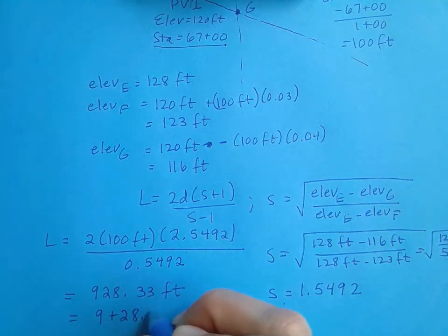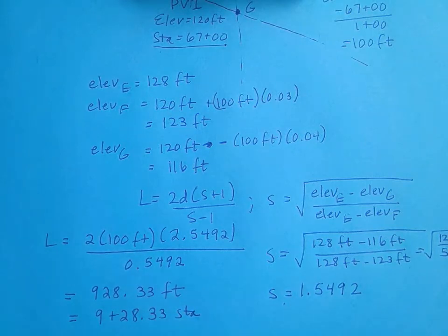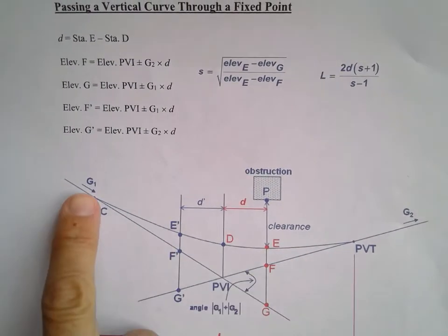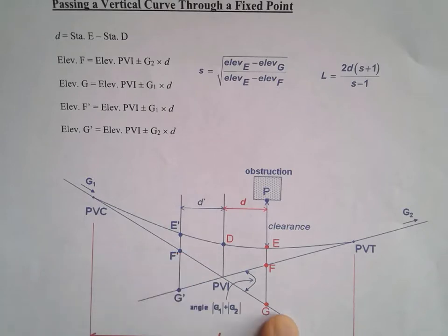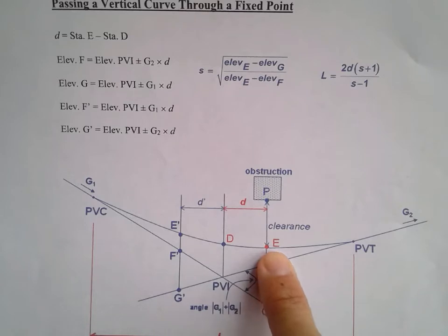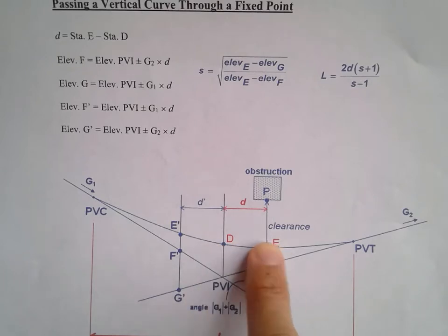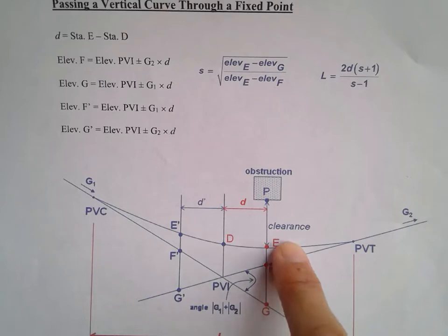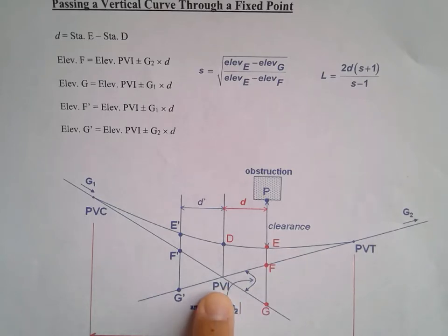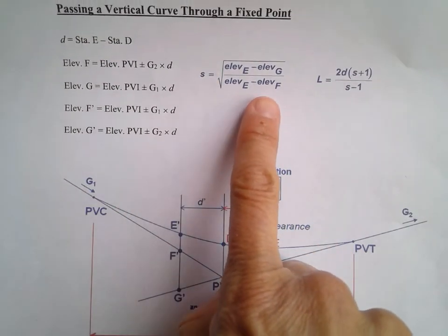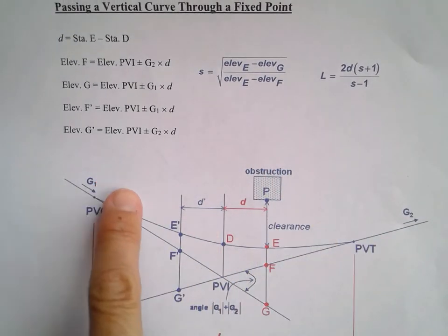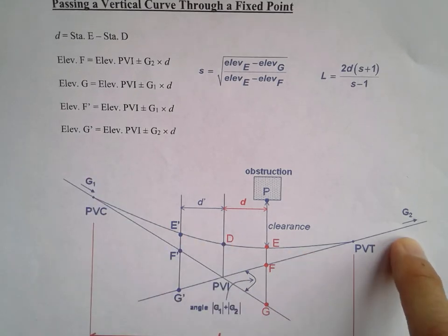In station notation, that's 9+28.33 stations. To recap: we were given the grades at the PVI, and the elevation and station of point E. We found the 100-foot distance d, computed elevations at F and G by following each grade from the PVI, solved for the dimensionless factor S, and plugged everything in to find the length of the vertical curve.